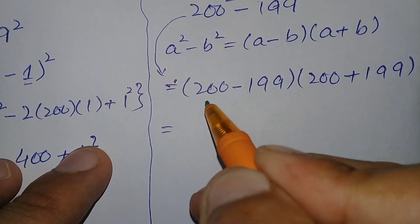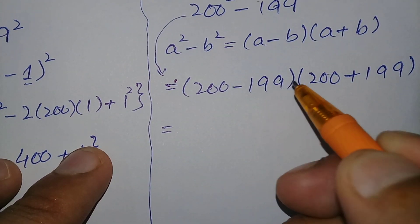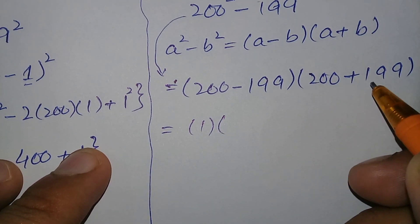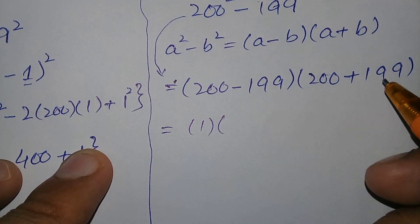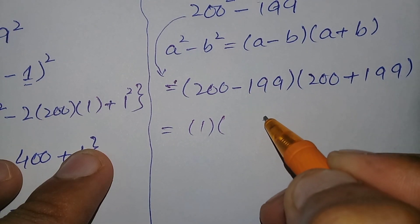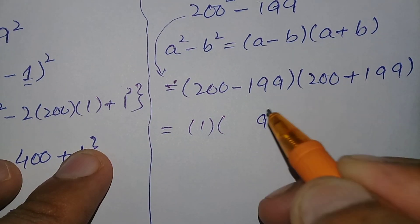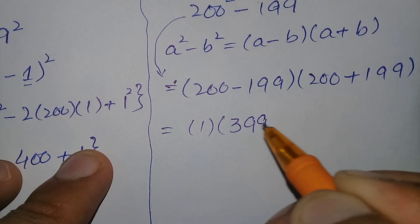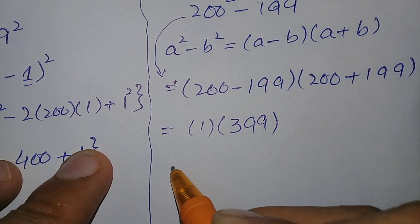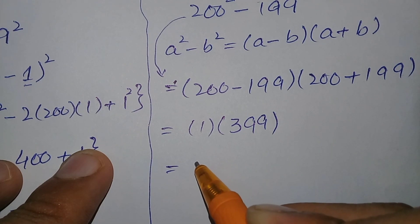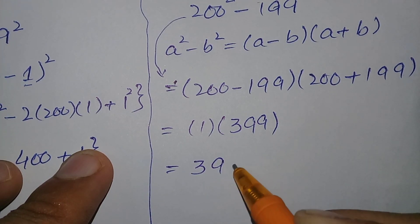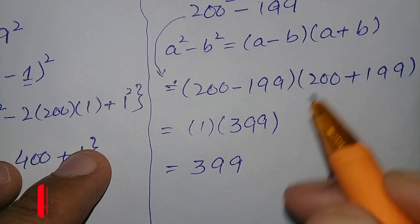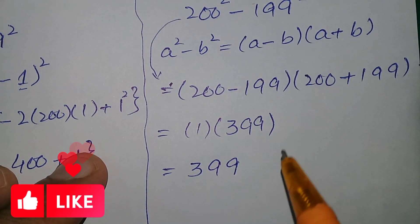Next, 200 minus 199 gives 1, and 200 plus 199 gives 399. Multiplying 1 by 399 gives 399. So 399 is the answer to this question using the second method.